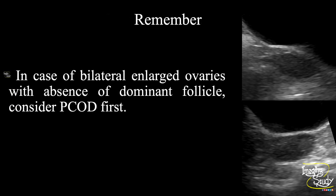Now the take-home message. Remember that on transabdominal ultrasound, if you get any case of bilateral enlarged ovaries with absence of a dominant follicle, try to consider polycystic ovarian disease first. This is a very common case in our community. On transabdominal ultrasound you may not well visualize these tiny follicles, but bilateral enlarged ovaries may help you make a diagnosis. Unilateral enlargement is also seen in polycystic ovarian disease, but that is extremely rare, so try to stick with the bilateral enlarged ovaries point.